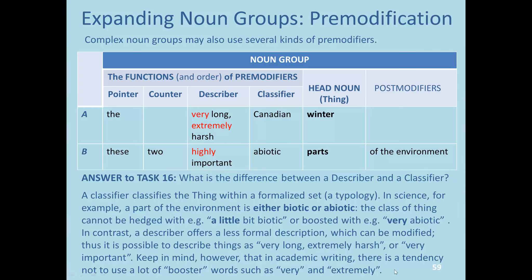In academic writing, there's a tendency not to use a lot of booster words like 'very' and 'extremely,' even for describers. This example shows the difference between describers and classifiers as pre-modifiers.